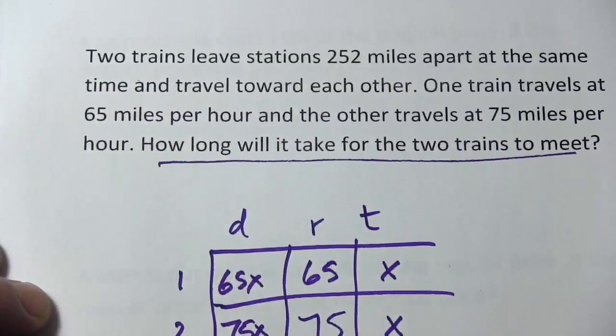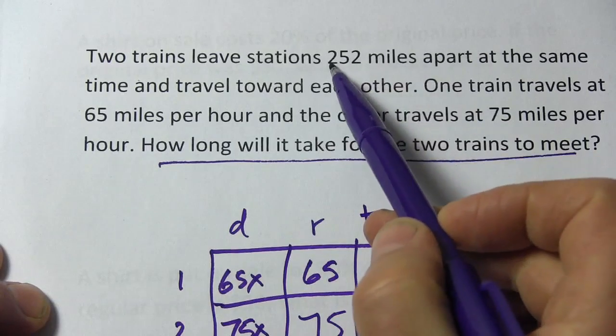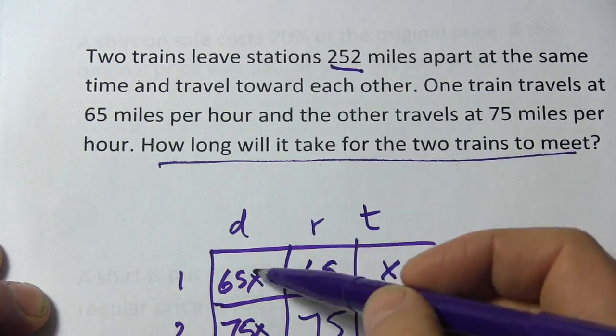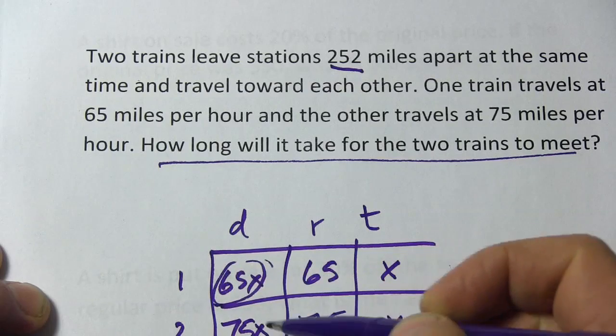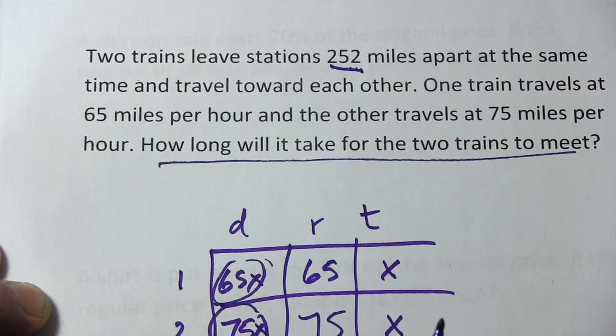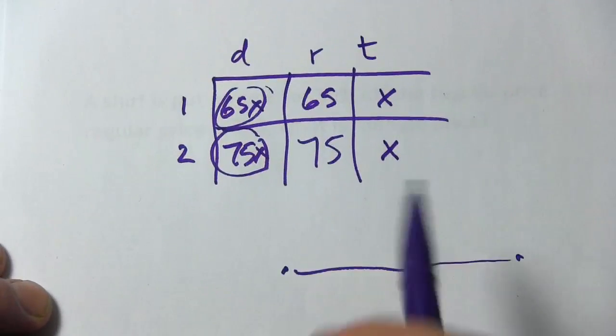Now I've got one other piece of information up here, and that is the total distance. They're 252 miles apart. Which means that this distance that train 1 travels plus this distance that train 2 travels is going to add up to 252. And that's the key to solving this.